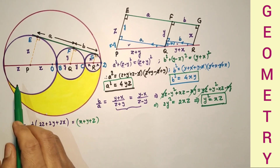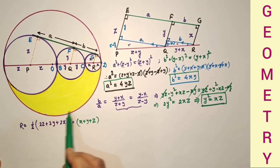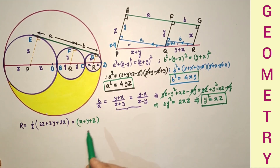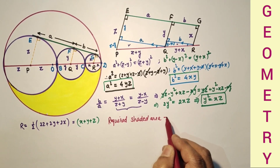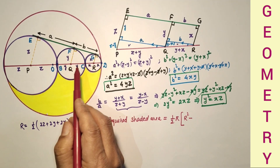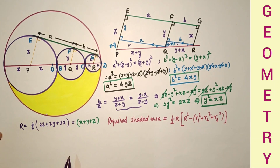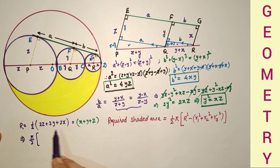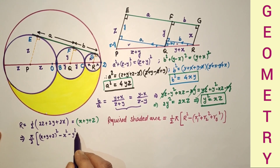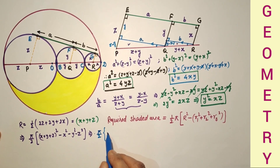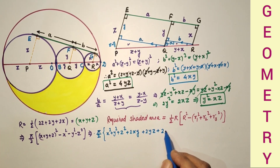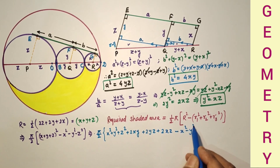Now for the required shaded area: this area is part of a semicircle. So the required shaded area equals the area of the bigger semicircle minus the area of the first small semicircle minus the area of the second minus the area of the third. Required shaded area equals (π/2)[R² minus R₁² minus R₂² minus R₃²], that is (π/2)[(X plus Y plus Z)² minus X² minus Y² minus Z²].